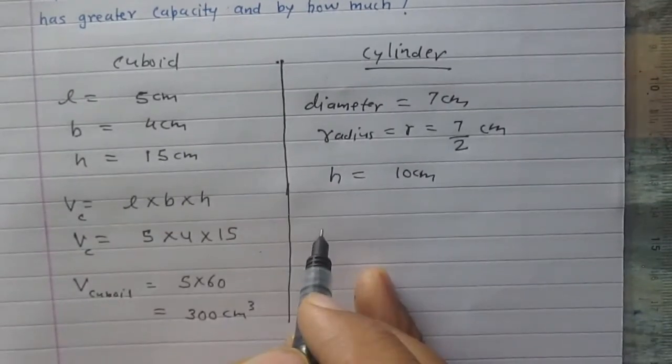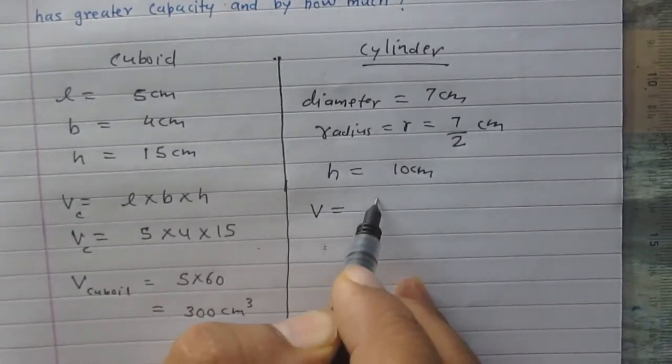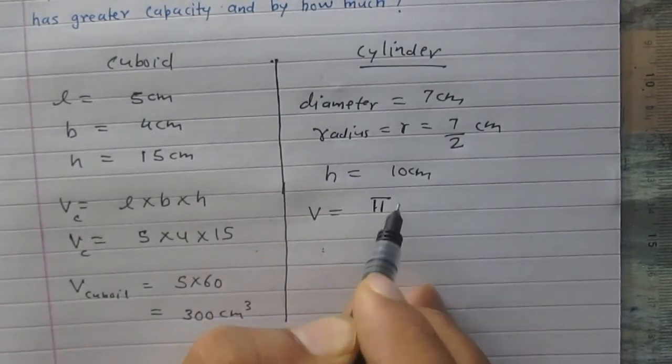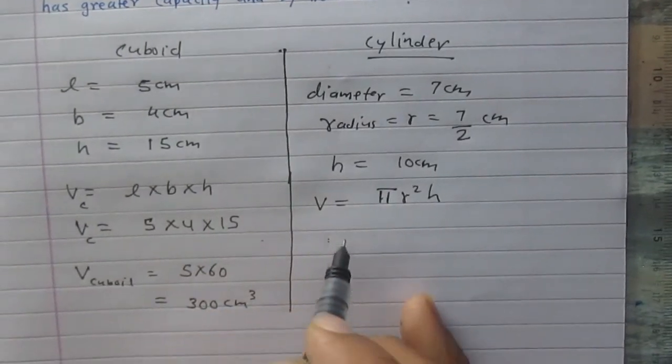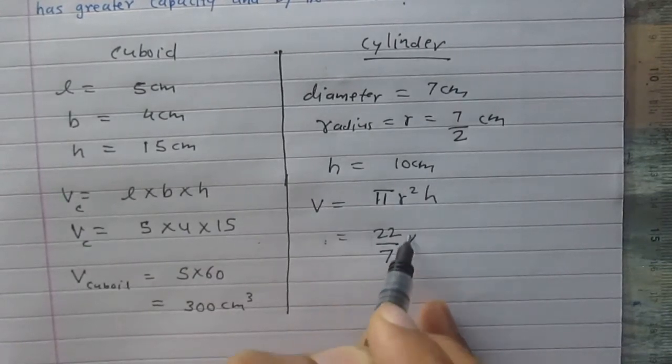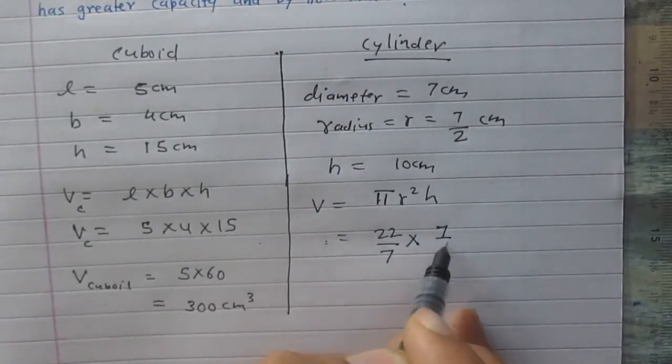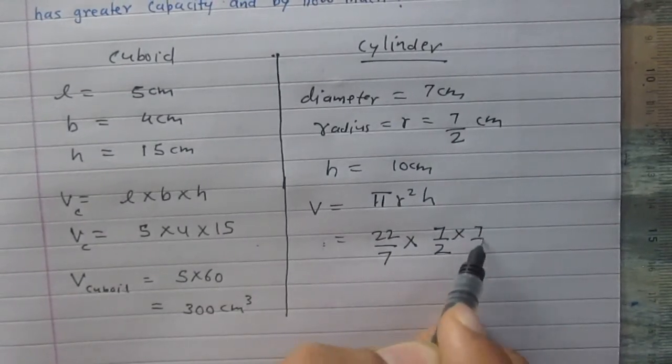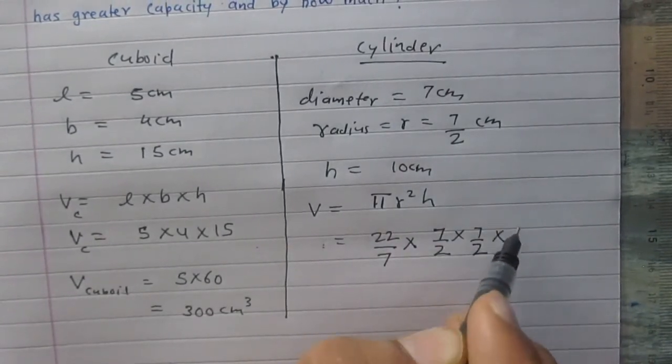According to the formula, the volume of a cylinder is πr²h. We can use π as 22/7. The radius r is 7/2, so r² means (7/2) × (7/2), and h is 10.